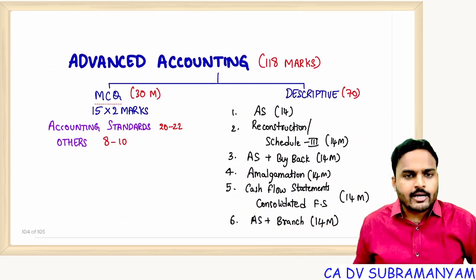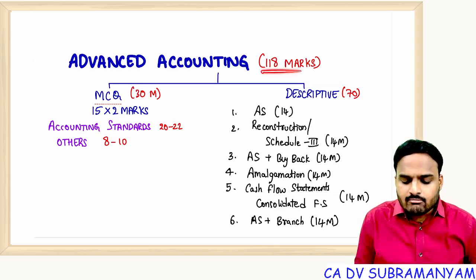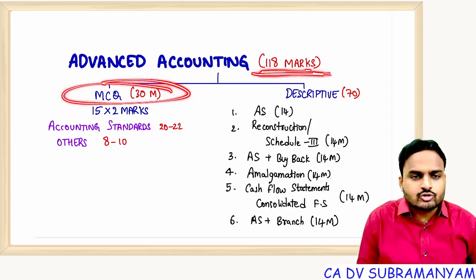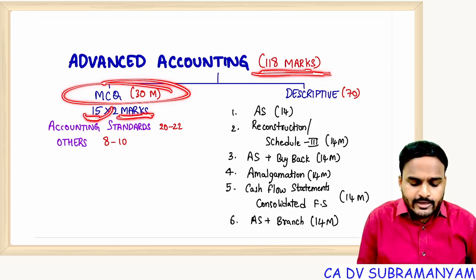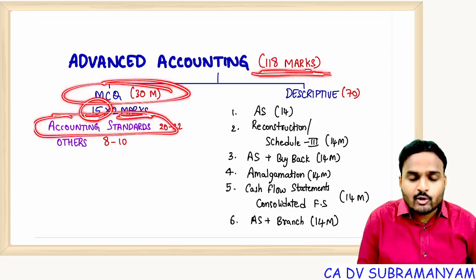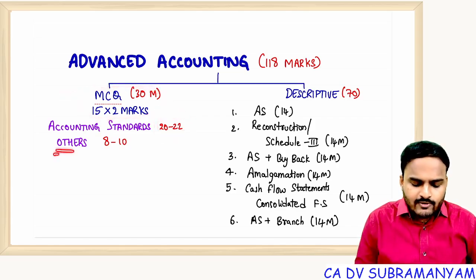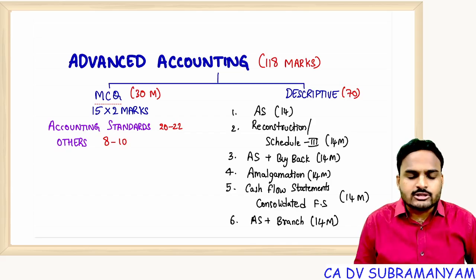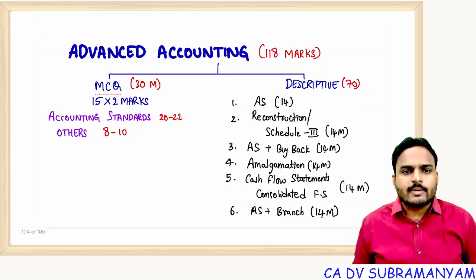Now looking at the question paper pattern: including choice, our paper is for 118 marks. Out of 118 marks, 30 marks is the objective paper where you will find 15 multiple choice questions, each carrying 2 marks. Out of 15 questions, 10 questions are from accounting standards, so you can expect 20 to 22 marks in MCQs from accounting standards, and 8 to 10 marks from other topics like cash flow statements, Schedule 3, and buyback.